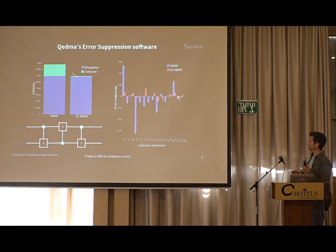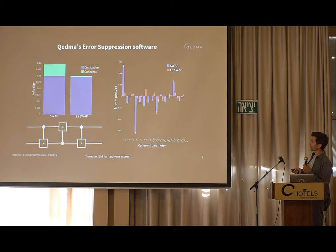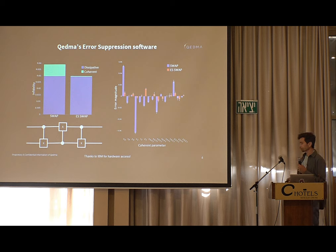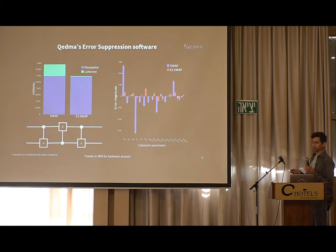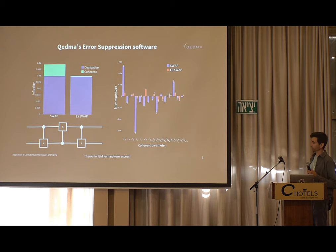Once we invert the errors, we can essentially eliminate the entire coherent contribution, leaving a purely dissipative gate. This is the idea of error suppression in general, and it is resource-free — it's just this one swap gate sub-circuit replaced by some other sub-circuit. It costs nothing apart from the characterization, which is very fast.